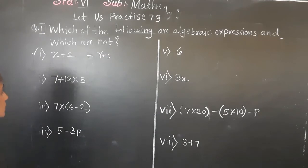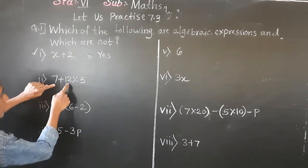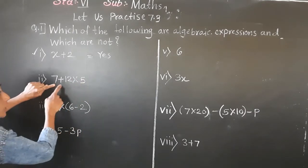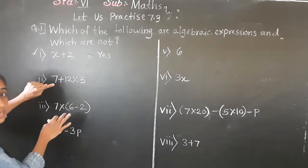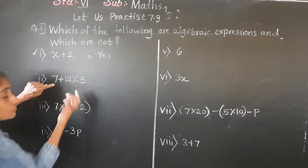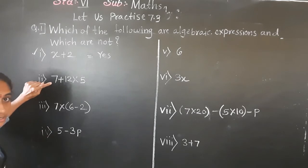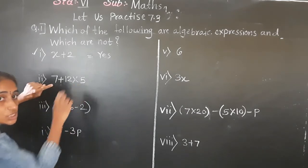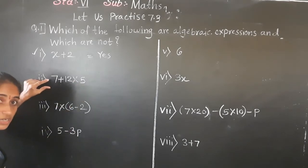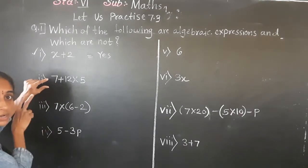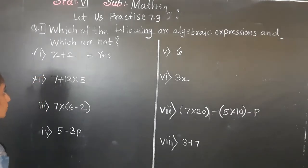In the second example, 7 plus 12 multiplied by 5: basic operations are there, constants are there, but no variable is given. So this is not an algebraic expression.